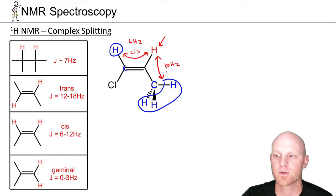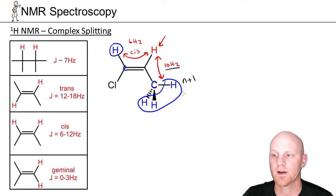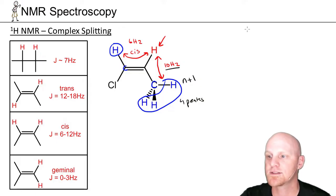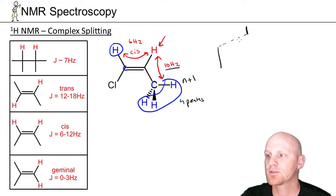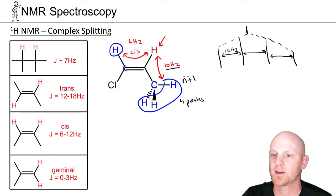I highly recommend you start with the larger splitting first — we'll start with the 10 hertz. Applying the N+1 rule here, with three neighboring hydrogens plus one, we get four peaks. So splitting a signal into four peaks separated by 10 hertz, we'd end up with something like a quartet pattern. This distance between all adjacent peaks would be 10 hertz.